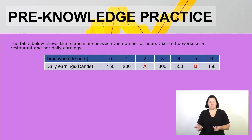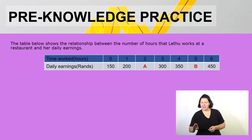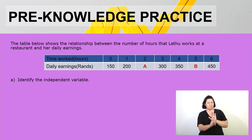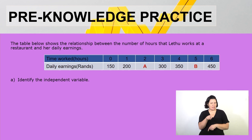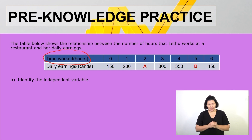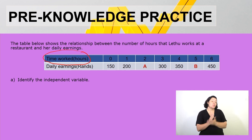Already we have missing value A and missing value B. The first question says: identify the independent variable. Our independent variable is always located at the top part of the table. Therefore, in this case our independent variable will be represented by the time worked in hours.